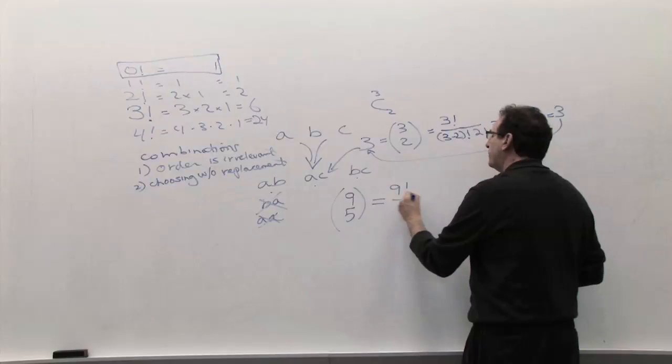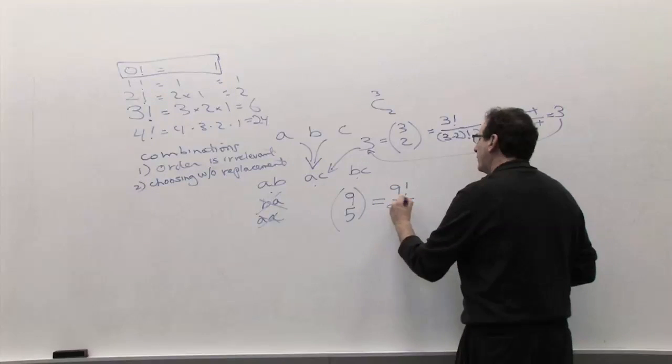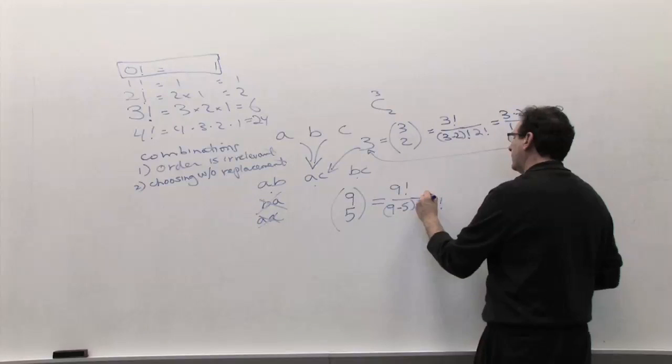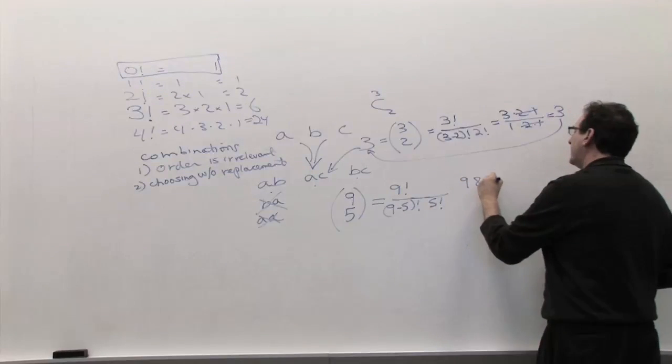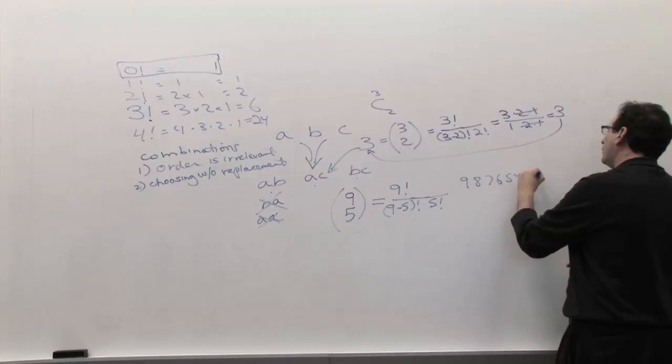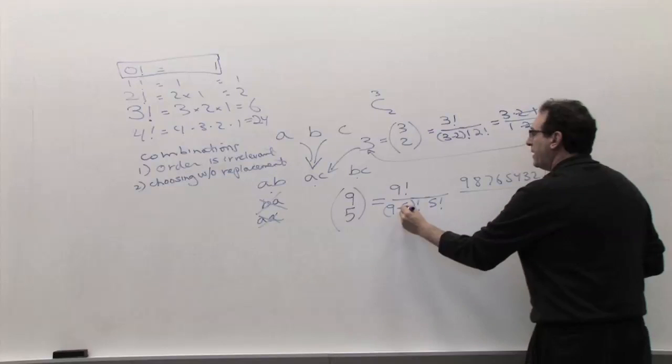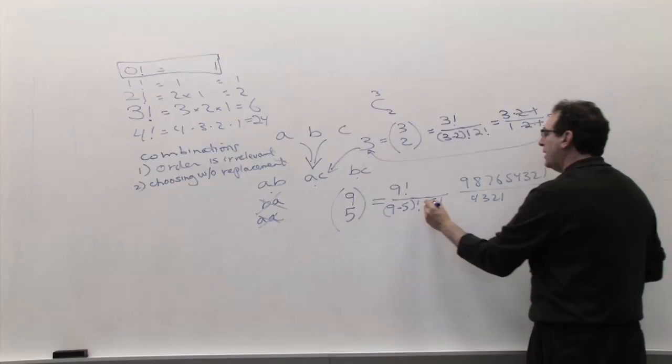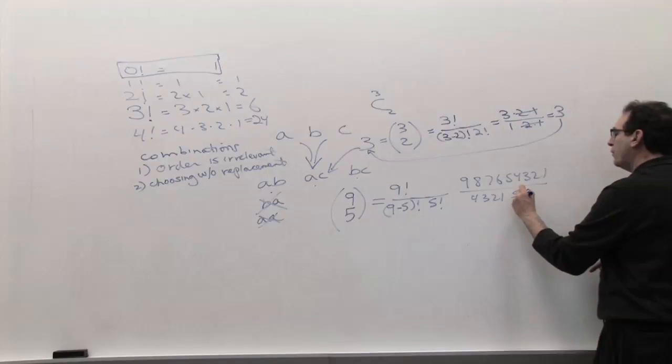And according to the formula, it'll be nine factorial, nine minus five factorial, and then five factorial, which is nine, eight, seven, six, five, four, three, two, one. Nine minus five is four. Four factorial is four times three times two times one. Five factorial is also five, four, three, two, one.